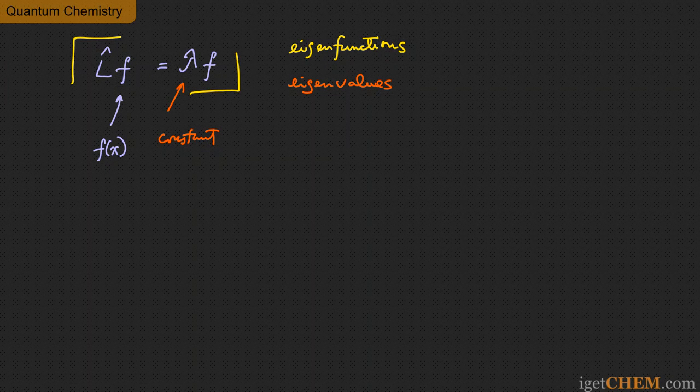When we say we're solving an eigenvalue equation, we're really doing two things: finding those special functions f that satisfy that equation, and furthermore finding for each of these f that particular value of lambda you get back on the right side. In quantum mechanics, the Schrödinger equation is essentially solved by solving that eigenvalue system, so eigenfunctions and eigenvalues are really key to quantum mechanics.